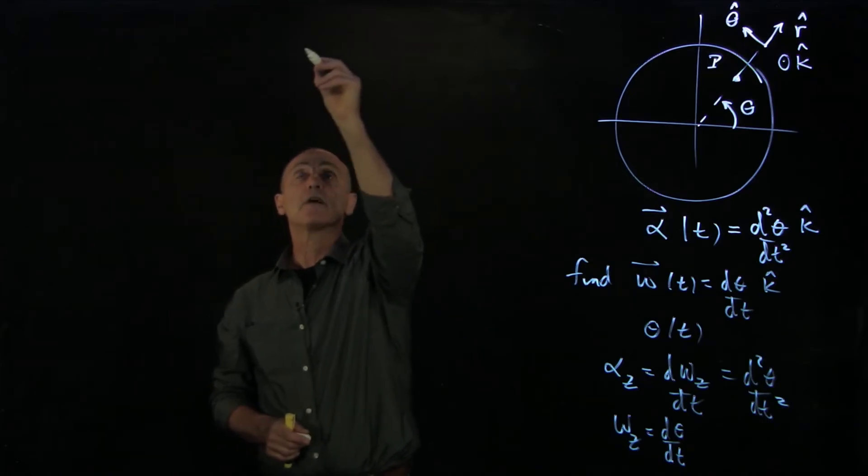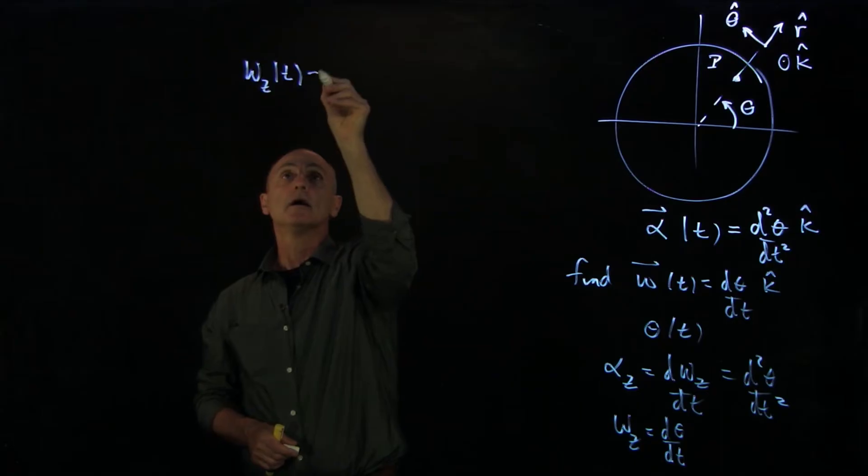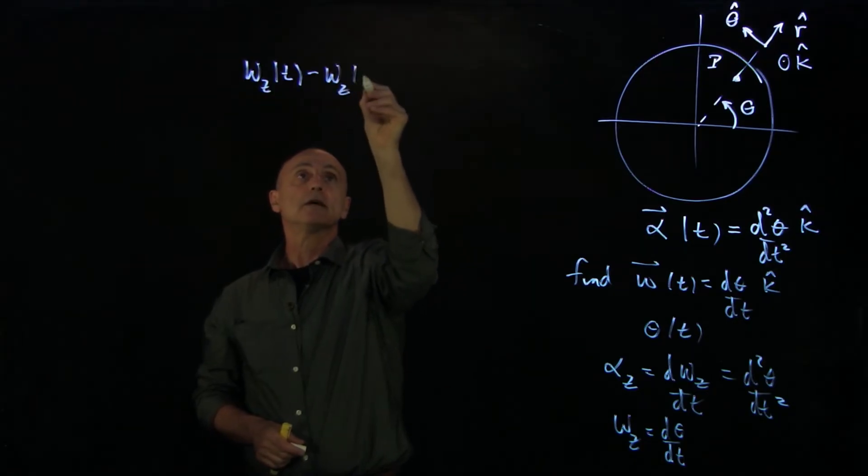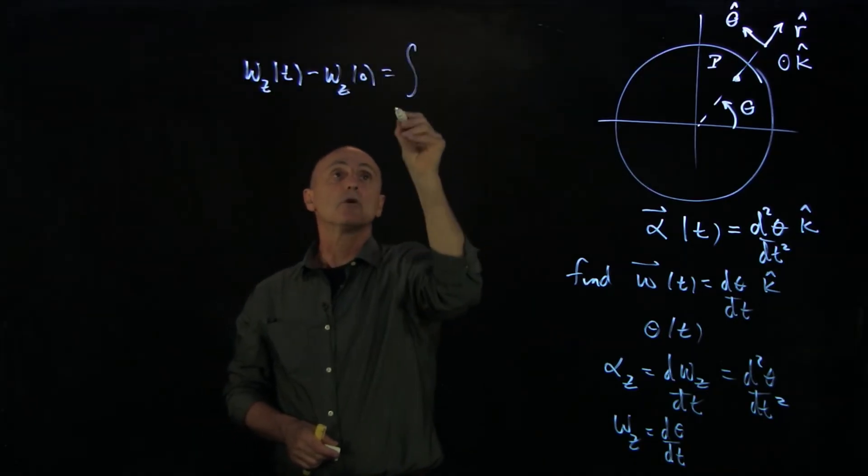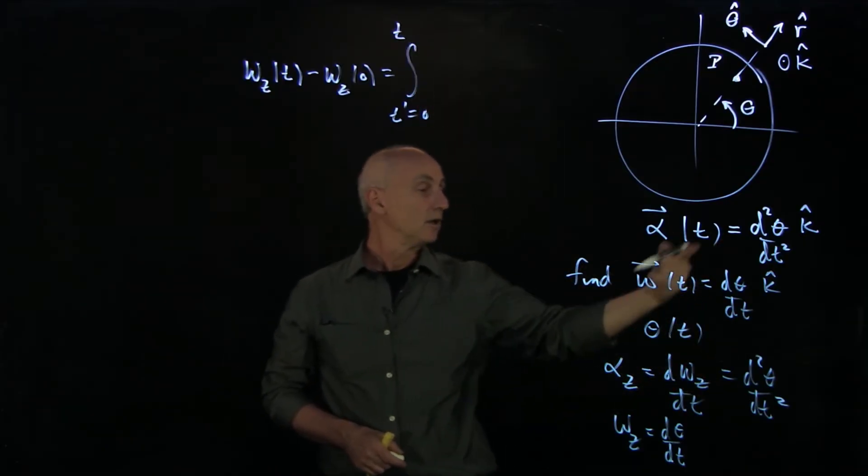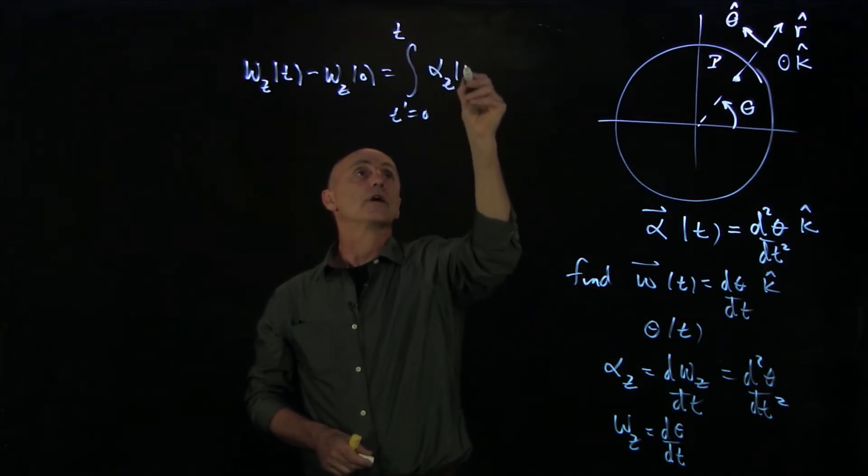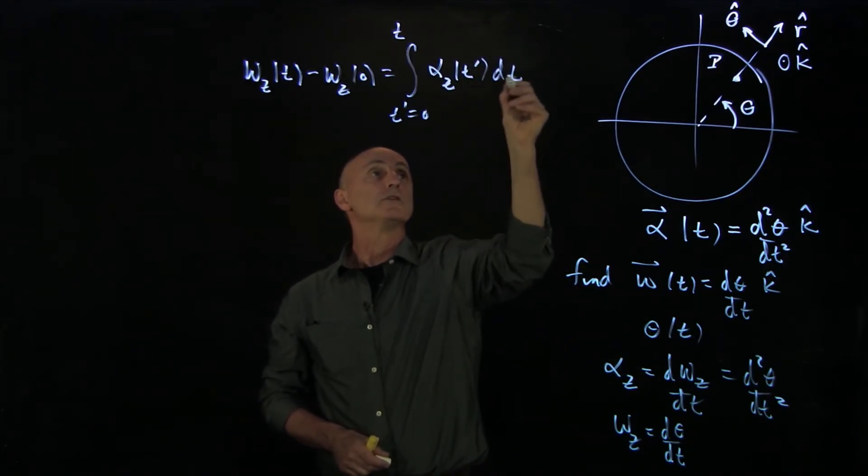So what we have here is that for some time interval, omega z at time t minus omega z zero is the integral from t prime equals zero to t of alpha z, which is our component of the angular acceleration, with integration variable dt prime.